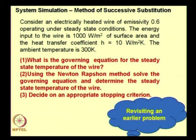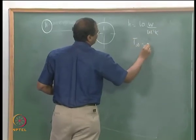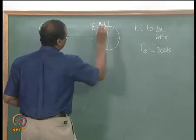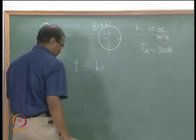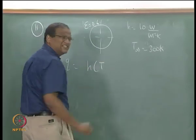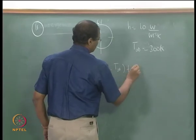The appropriate stopping criterion would be (T_{i+1} − T_i) squared. I have worked it out — it takes about 4 iterations, so maybe 10 to 15 minutes. The variable is T_w.